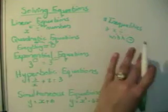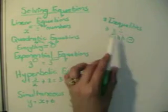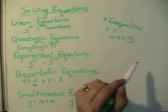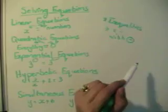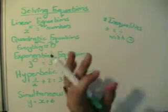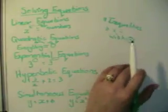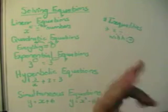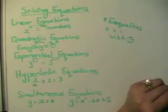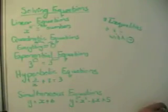For quadratic inequalities, you still take everything to one side with zero on the other and factorize, but the zero factor law changes slightly - there are a few extra things to consider, which I'll discuss in a separate video. The procedure up to the factorization step stays the same, with the same rule applying: multiply or divide by a negative and the inequality flips. That covers all the types of equations and their approaches - now I'll look at each one separately.